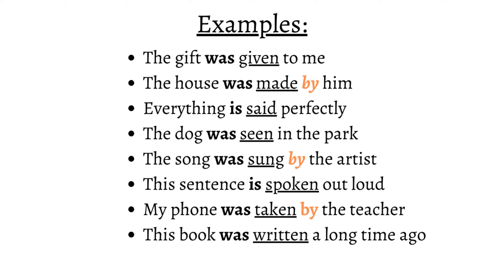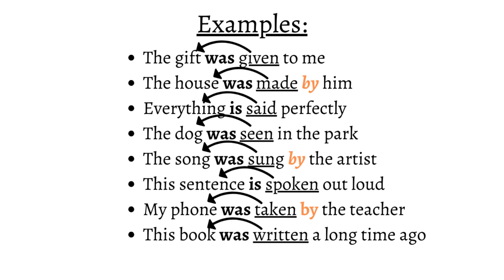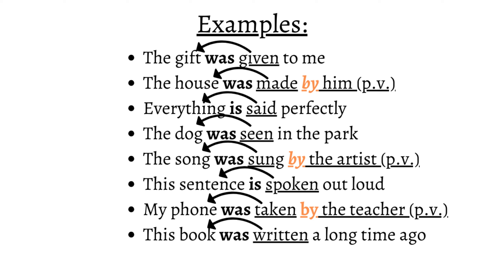Here are more examples with other English concepts: "The gift was given to me." "The house was made by him." "Everything is said perfectly." "The dog was seen in the park." "The song was sung by the artist." "This sentence is spoken out loud." "My phone was taken by the teacher." "This book was written a long time ago." These sentences use irregular participial adjectives that act upon the subjects. The passive voice is very clear here because each subject is acted upon by something else — by him, by the artist, by the teacher, and so on.